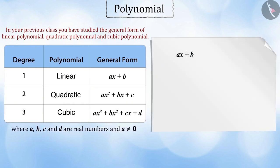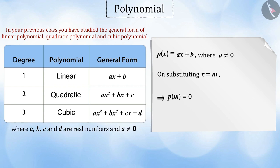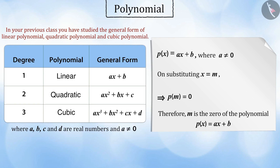Consider a linear polynomial p(x) = ax + b. Here, on substituting x with any real number m, if the value of the polynomial becomes equal to zero, then m is called the zero of the polynomial p(x). Now, let us understand the geometrical meaning of zeros of a polynomial.